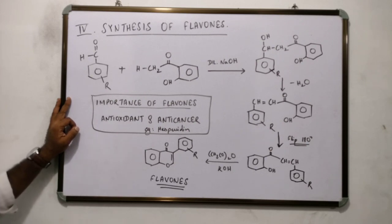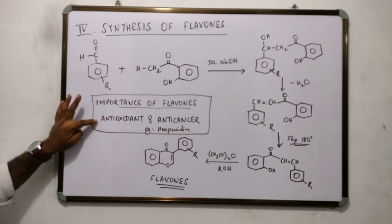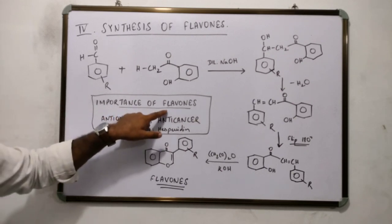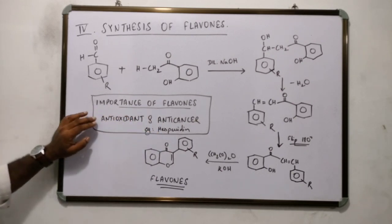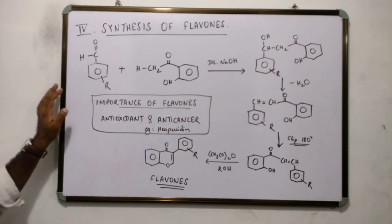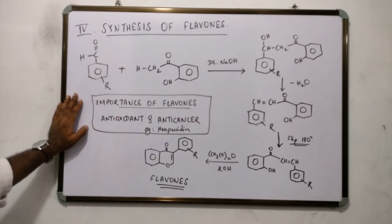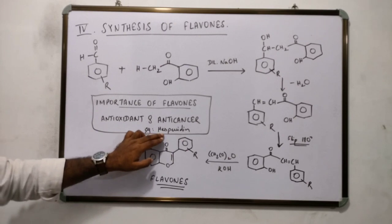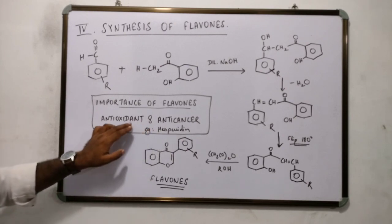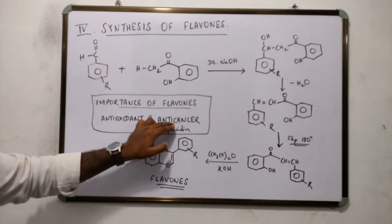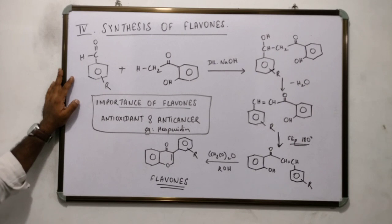It is the same property that we use in human medicine. Flavones are used as antioxidants and anti-cancer agents. An example of a flavone is hispiridine, which has potent antioxidant and anti-cancer activity.